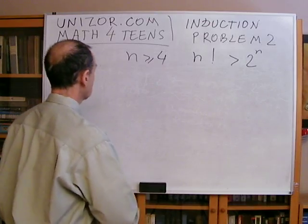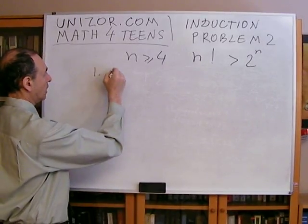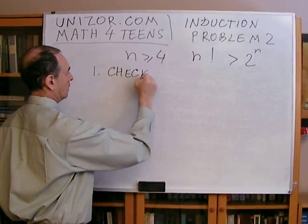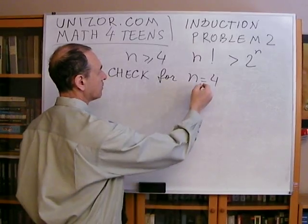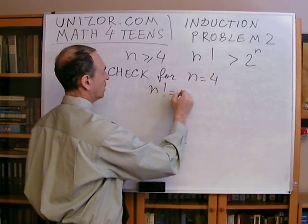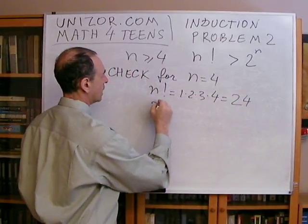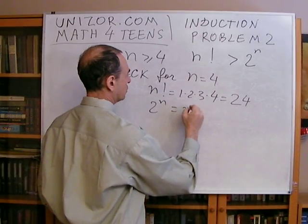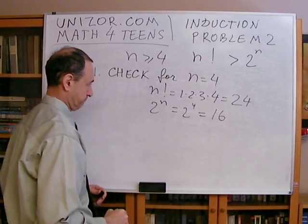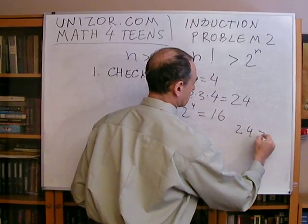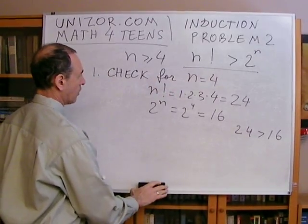Mathematical induction: three steps. Step number one — check — for n equals four. For n equals four, n factorial equals one times two times three times four, which equals 24. Two to the n equals two to the fourth power, which is 16. Obviously, 24 is greater than 16. So the formula is true for n equals four. Check.